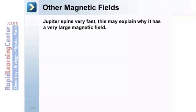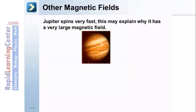Other magnetic fields. The planet Jupiter spins very fast. This rapid movement of its interior may explain why it has a very large, powerful magnetic field.